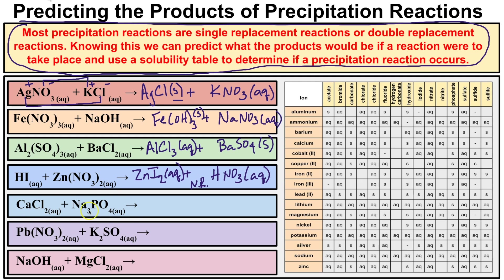Next we have calcium chloride in solution with sodium phosphate. The two possible products are calcium phosphate and sodium chloride, which is table salt. We know that sodium chloride dissolves in water. If we take a look at calcium and go over to phosphate, we see that it does not dissolve in water. So calcium phosphate will be your precipitate, and yes, a chemical reaction takes place.